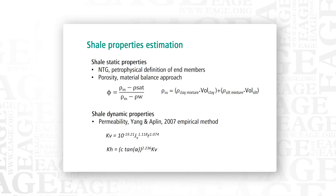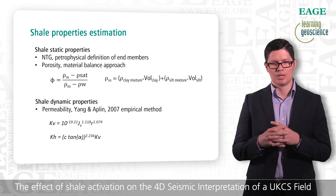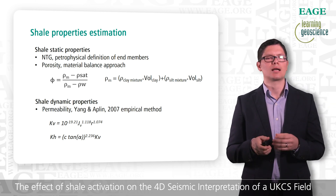Shale characterization to estimate static and dynamic properties was done through a petrophysical analysis following a material balance approach where the clay fraction composition is the key. As only a few conventional reservoir-acquired shale data analyses exist, the proportion and presence of the different types of clay has to be done through a basin analysis or clay provenance study. For the permeability estimation, I used the empirical method of Yang and Appling (2007), which is based on porosity, pressure, and clay fraction proportion.